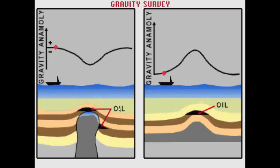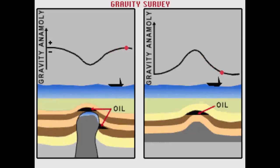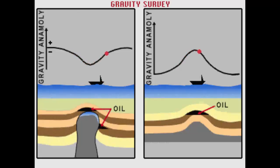A gravity survey involves the precise measurement of the gravitational pull, G, at close stations along the track using a very sensitive instrument called the gravimeter. Positive deviations from the regional average indicate heavier rocks, whereas negative anomalies imply a relatively lighter rock. A grid of such survey lines allows us to map the anomalies across the area, and the analysis of these anomaly maps gives us an indication of the underlying rock types and structures.